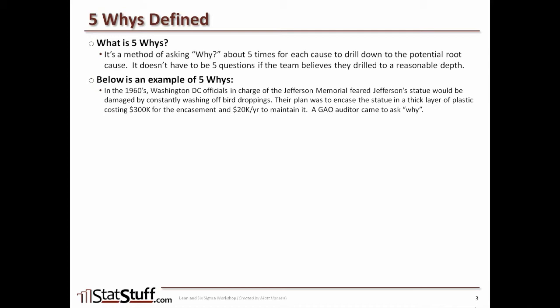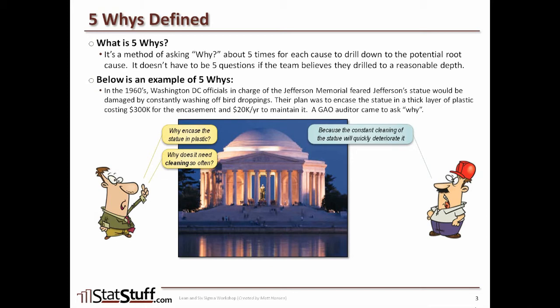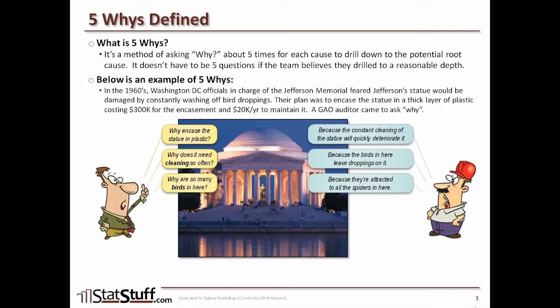But a GAO auditor came in and started asking why. The auditor first asked, 'Why do we want to encase the statue in plastic?' The engineer responded: because the constant cleaning of the statue will quickly deteriorate it. The auditor then asked why it needs cleaning so often — because the birds leave droppings on it. Why are there so many birds? Because they're attracted to all the spiders in here. Why are there so many spiders? Because they're after the flies coming at night from the tidal basin.